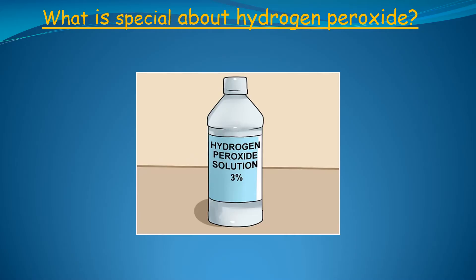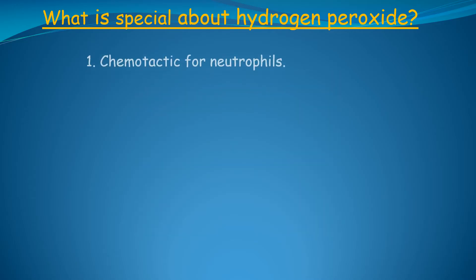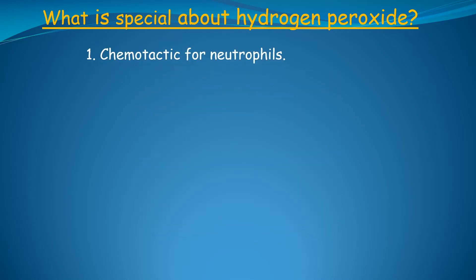Hydrogen peroxide is highly pleiotropic, which means it has many different effects that explain the puzzling clinical behavior of this illness. No other molecule in the human body has all these molecular features. Some of the unique effects and characteristics of hydrogen peroxide that contribute to causing ulcerative colitis are: first, it is chemotactic for neutrophils, meaning that hydrogen peroxide can attract white blood cells called neutrophils into the colonic epithelium, leading to ulcerative colitis. Very few molecules are chemotactic for neutrophils.